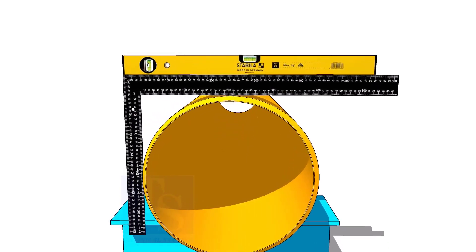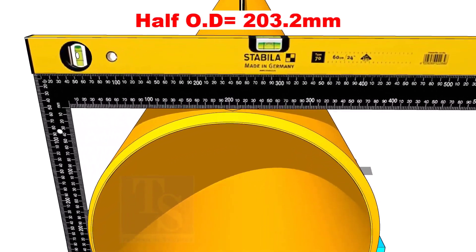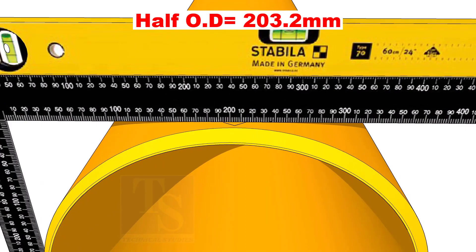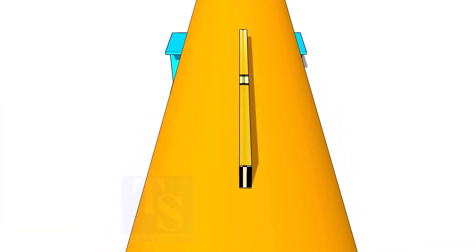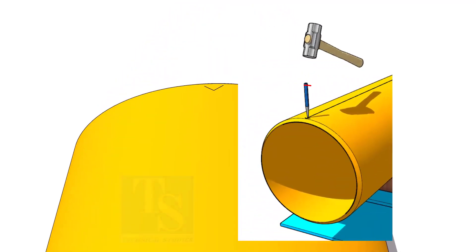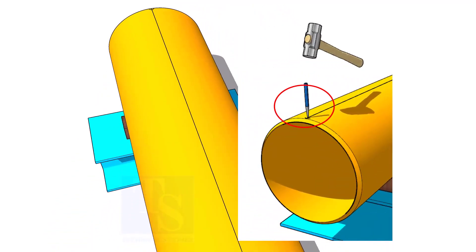Mark the half OD on the top of the pipe. Don't forget to cross-check from the opposite side. Mark the center of the other end of the pipe and draw a line. If required, punch mark the line ends.